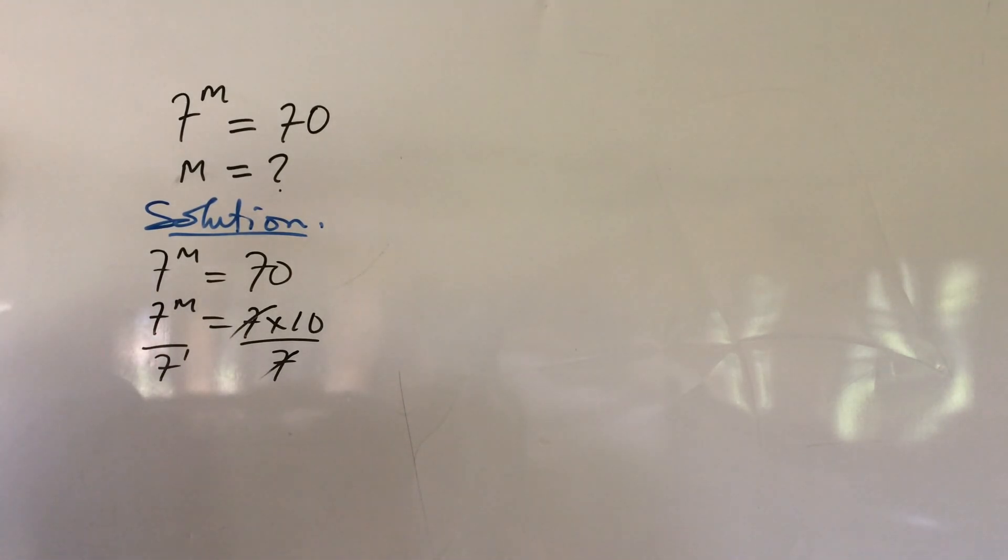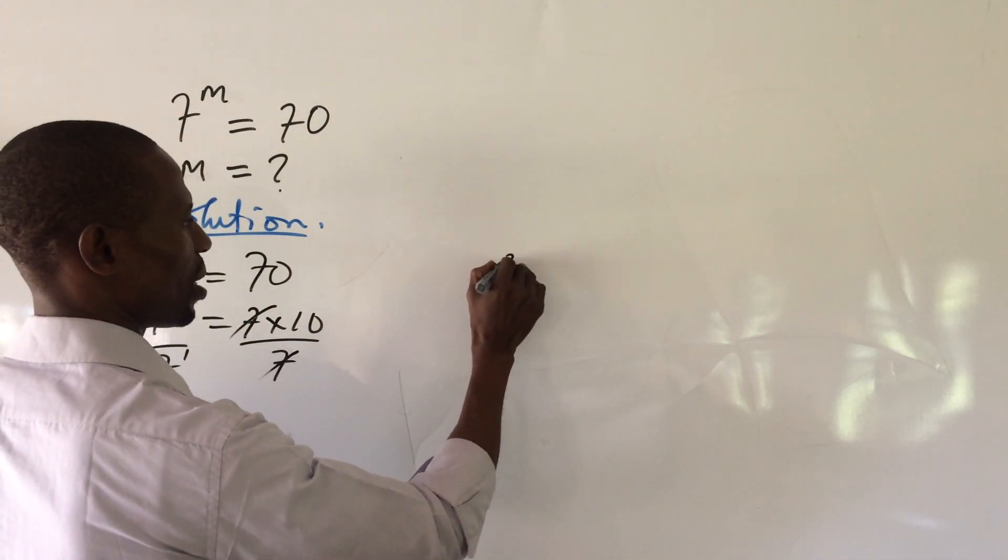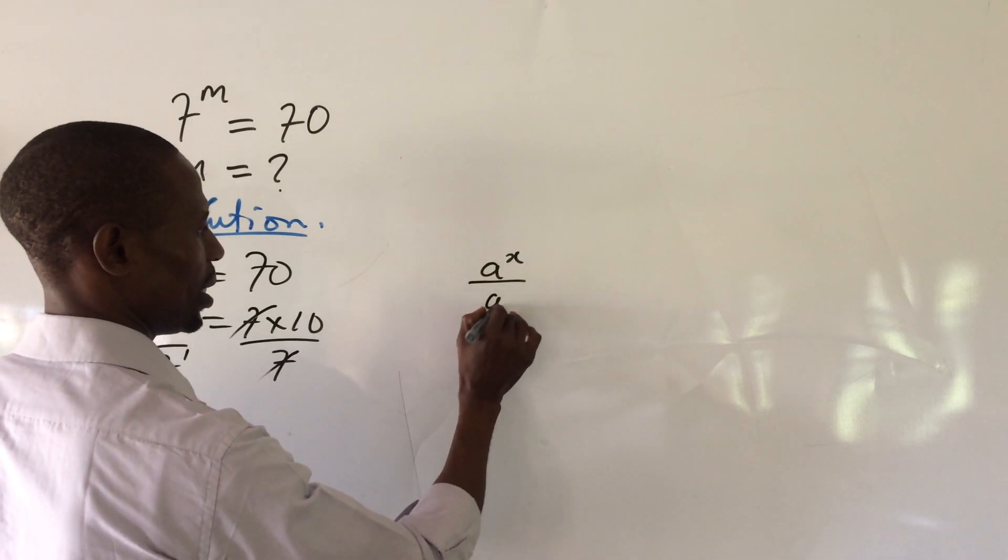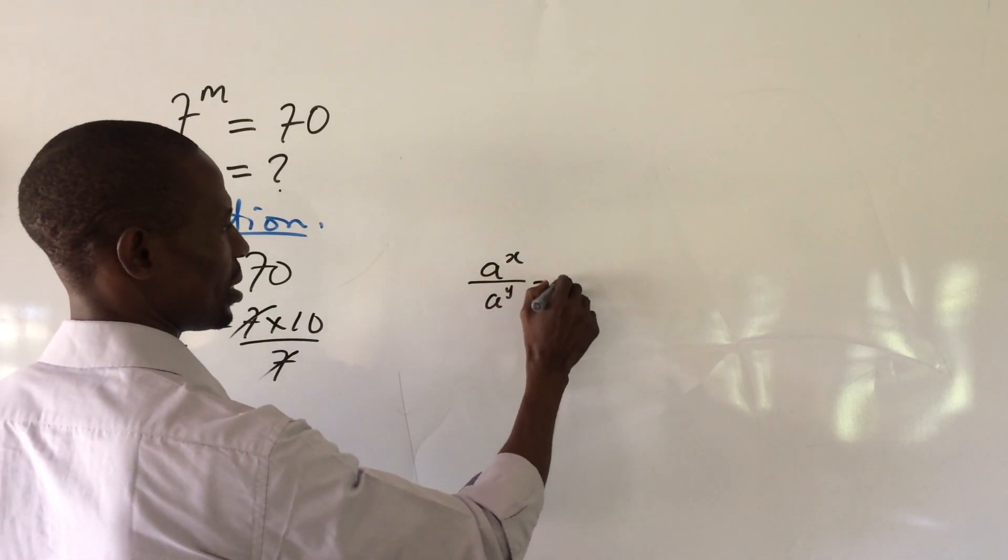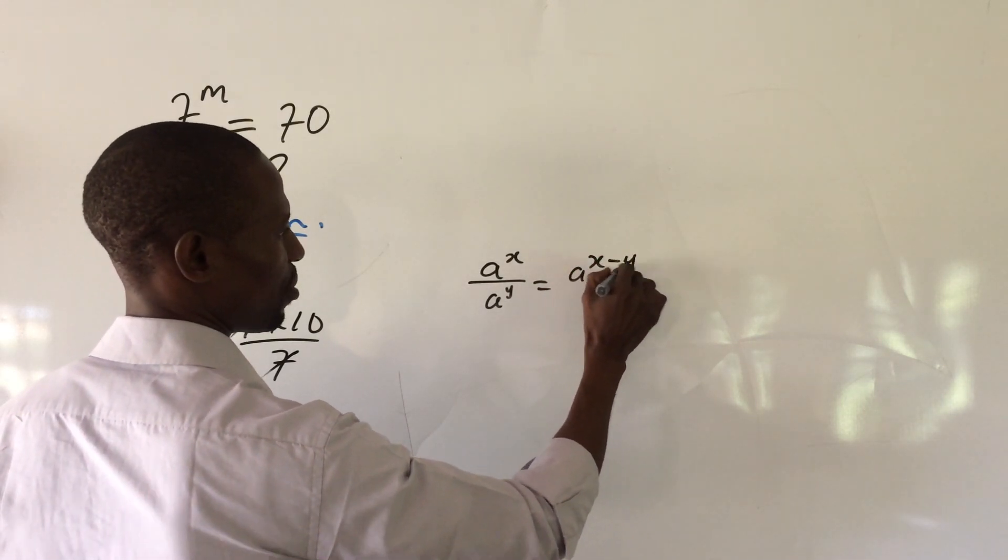Mind you, this is to the power of 1. So what we do here, according to the law of indices, we say that if you have a to the power of x all over a to the power of y, this is the same thing as a to the power of x minus y.